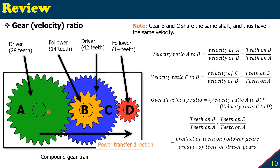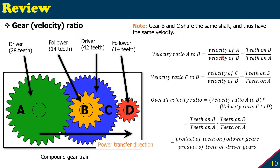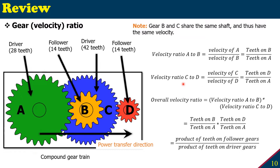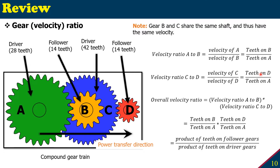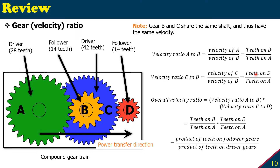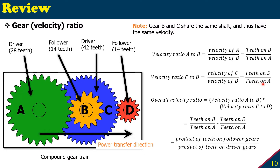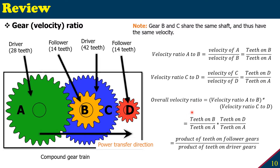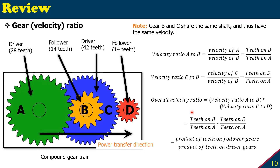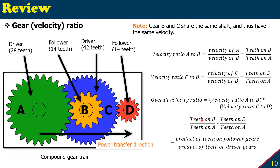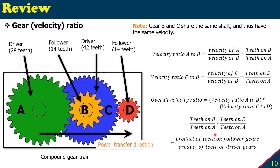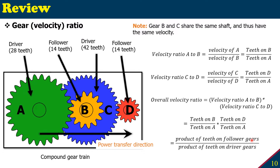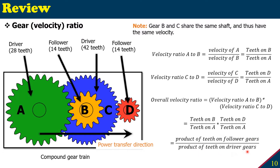The definition remains the same. For example, from A to B the velocity ratio is the teeth on the follower B over the driver A. Similarly, the velocity ratio from C to D is the teeth on the follower D over the driver C. The overall velocity ratio is the product of velocity ratio A to B multiplied by the velocity ratio C to D, which simplifies to the product of the teeth on all follower gears over the product of the teeth on all driver gears.